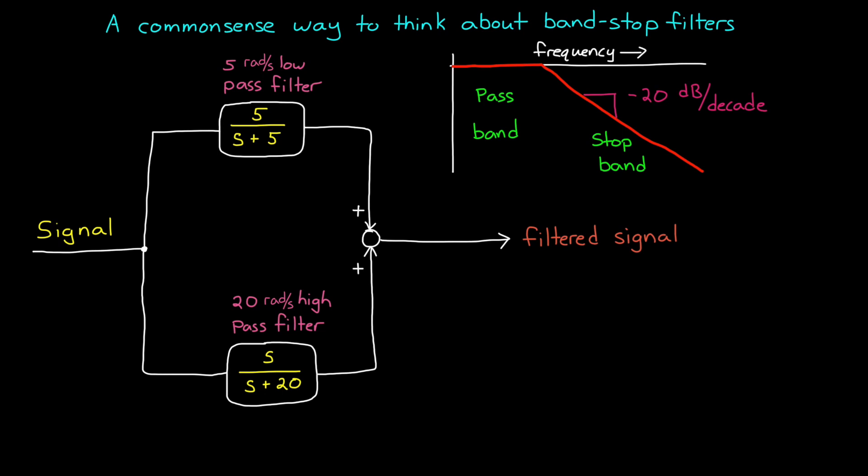The first-order high-pass filter would be the mirror of that. It would pass through high frequencies nearly unaltered, and the lower frequency amplitudes are the ones that would fall off at 20 dB per decade.